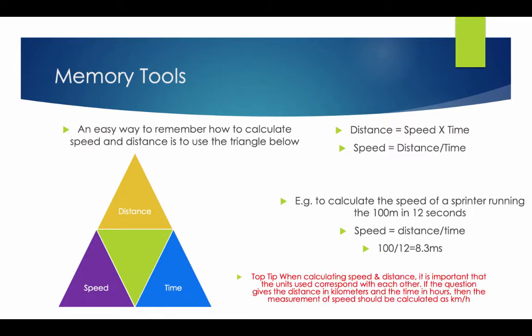Top tip: when calculating speed and distance, it is important that the units correspond with each other. If the question gives you the distance in kilometers and the time in hours, then the measurement of speed should be calculated as kilometers per hour.